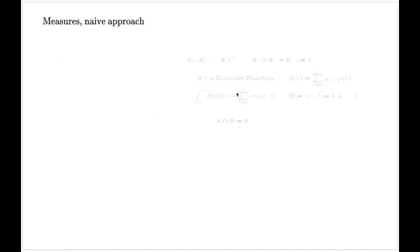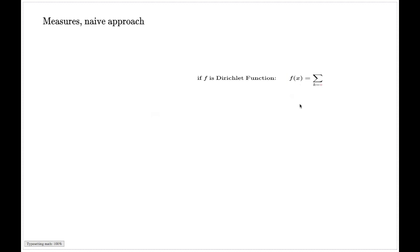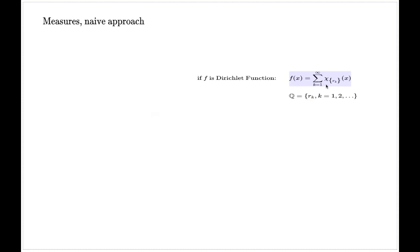I'll draw your attention to the Dirichlet function. Remember, the Dirichlet function was one example of a function which wasn't Riemann integrable. This function has a representation as a sum over all rational numbers. The rational numbers form a countable set, so you can index every rational number with an integer — R sub K — and represent the Dirichlet function as the sum of all indicator functions of one-point rational point sets.